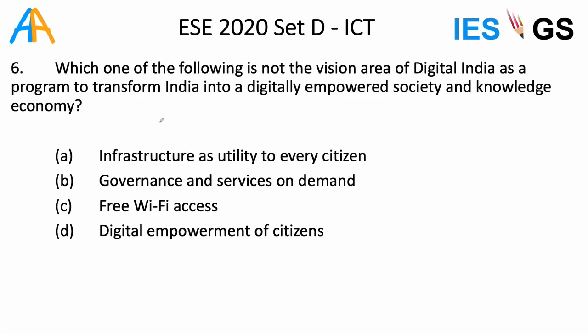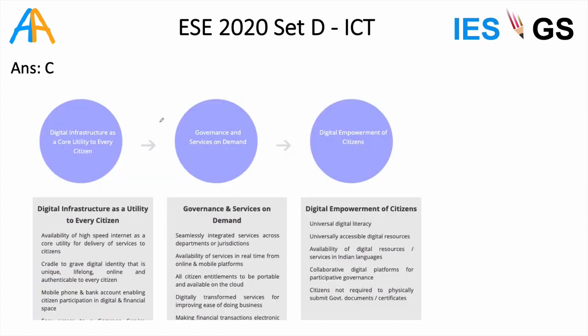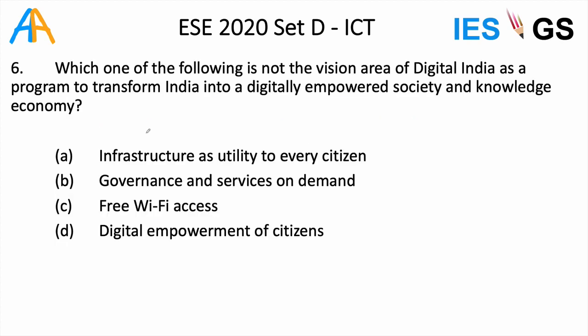The next question asks about the vision areas of Digital India as a program to transform India into a digitally empowered society and knowledge economy. There are three main vision areas of Digital India: digital infrastructure as a core utility, governance and services on demand, and digital empowerment of citizens — as provided by the Government of India. This is an easy question if you have read about Digital India.